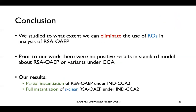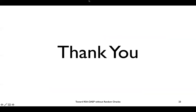To conclude, we studied to what extent we can eliminate the random oracle assumptions on G and H in RSA-OAEP encryption. In prior works, there were no positive results in the standard model for RSA-OAEP or its variants under IND-CCA2 security. We gave partial instantiation results for RSA-OAEP under CCA2, a full instantiation for the S-Clear variant under CCA2, and CCA1 for T-Clear RSA-OAEP. Thank you very much. I would be happy to take any questions.